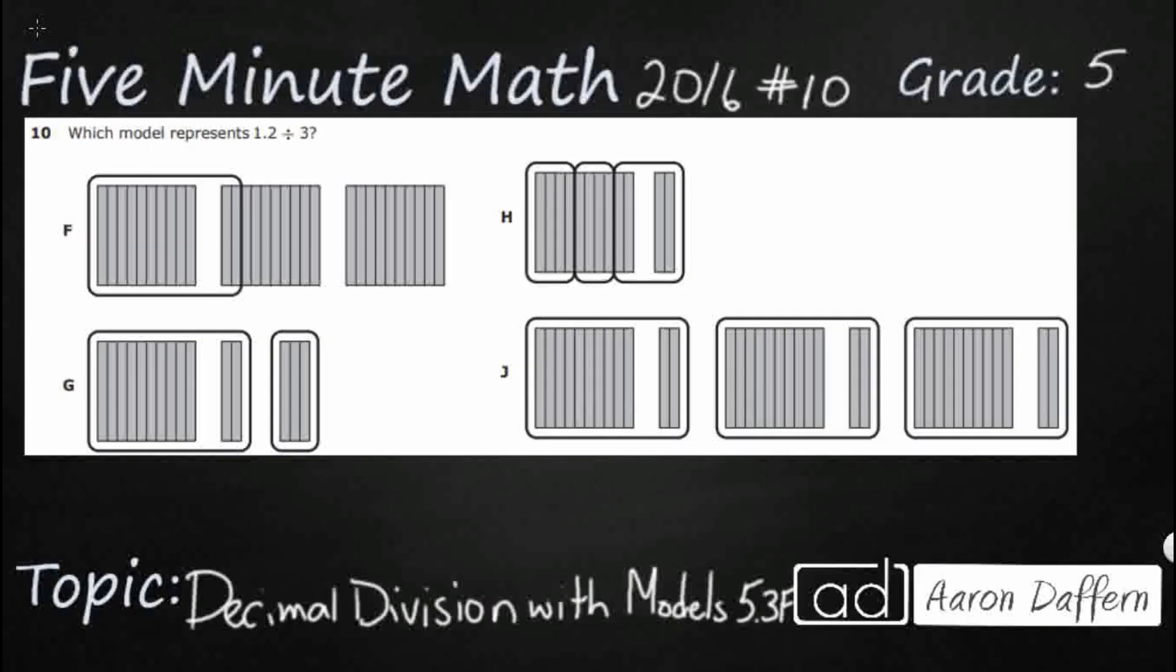So we have a simple division problem which we will solve. I'll show you how to do that: 1.2 divided by 3. We need to match it up to a model first, so let's take a look at each of these models and see if we can find one that matches. So let's take a look at F first.